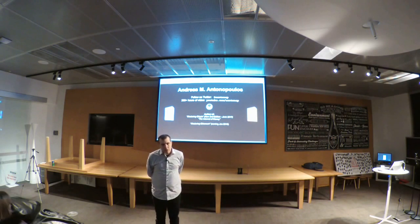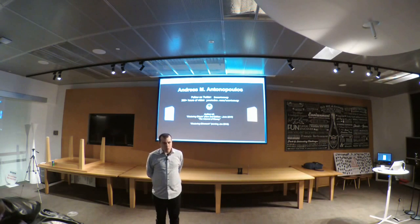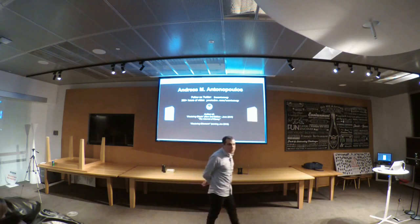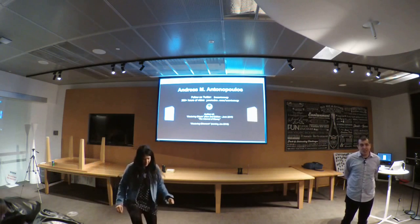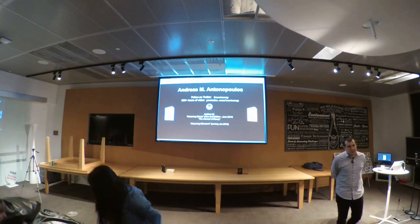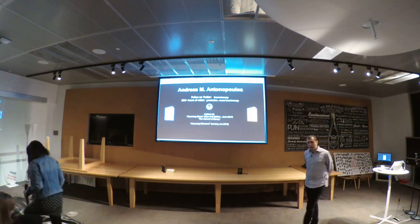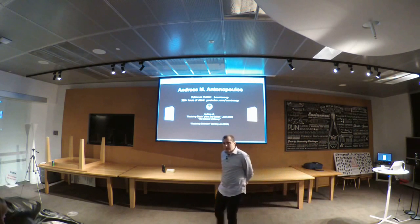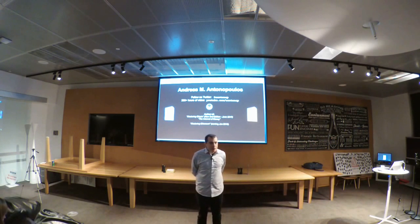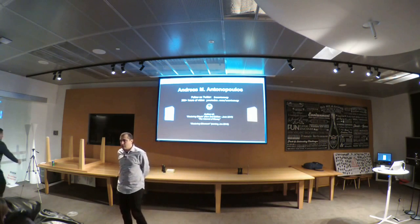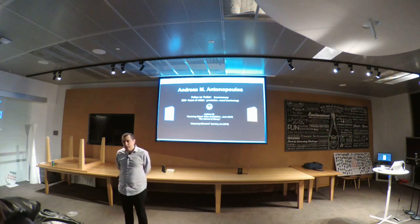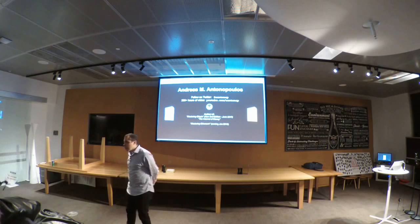I won't take a position on scaling options for a simple reason: I think we will do all of them. We will do SegWit. Segregated witness is an architectural change to the structure of a transaction that removes the signatures from inside a transaction and places them in an extension of a transaction. It solves a number of problems, including transaction malleability and quadratic hashing, which is a problem that can lead to denial of service. It allows for second-layer implementation, such as Lightning Network and other things like that.